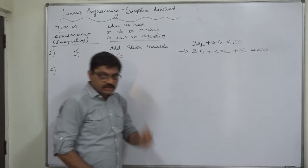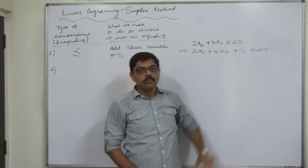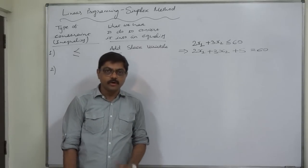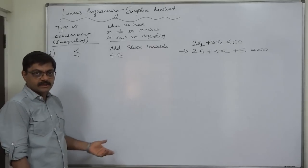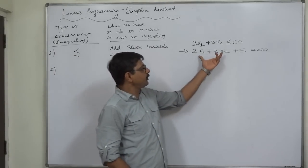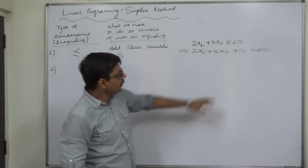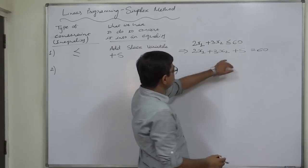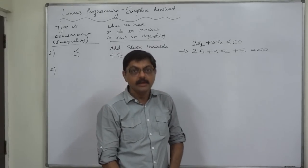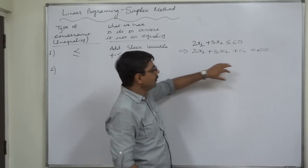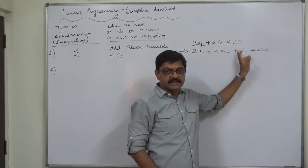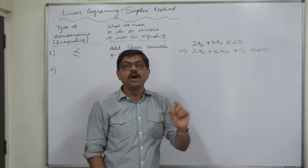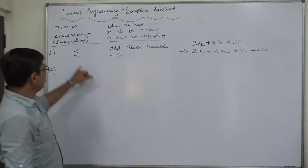Here, s is a slack variable — a virtual variable we have introduced. The logic is: if the values of x1 and x2 are both 0 (as in the simplex method, our starting point is always 0,0 assuming no production), then 0 + 0 = 60 is not possible. But if we introduce the slack variable, 0 + 0 + s = 60, therefore s = 60. This means the slack variable represents unused resources.